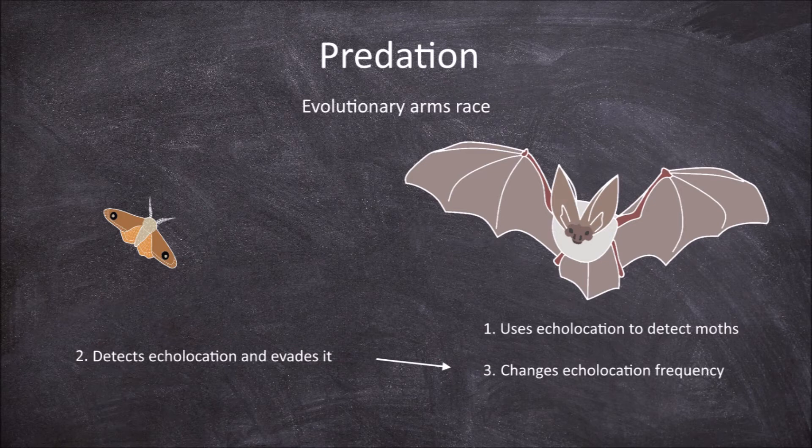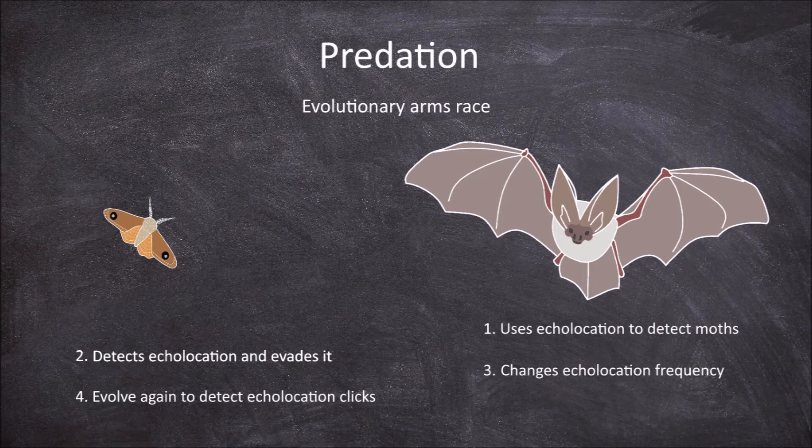Then the moths evolved the ability to detect these and in some cases also be able to discriminate between different levels of clicks to determine whether they are being hunted or just found by the bat, to save energy on defensive manoeuvres.